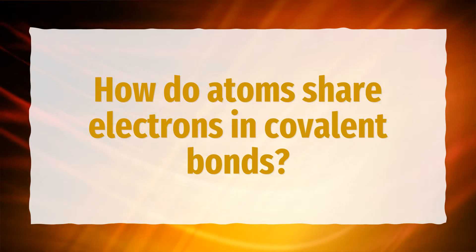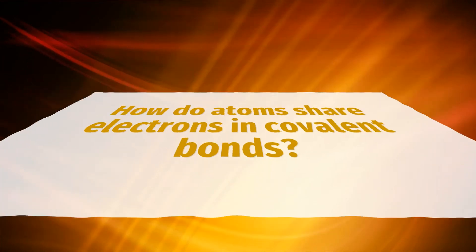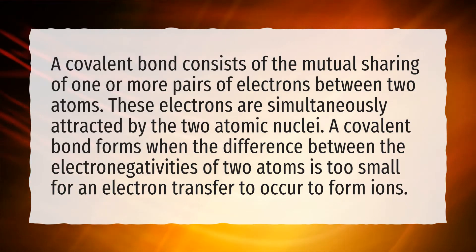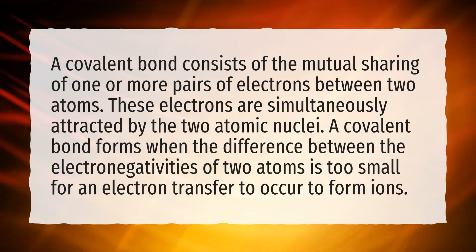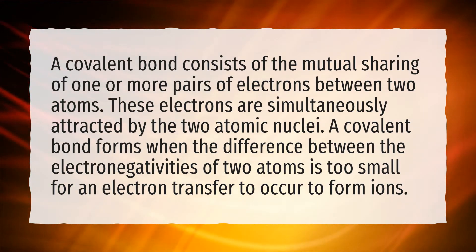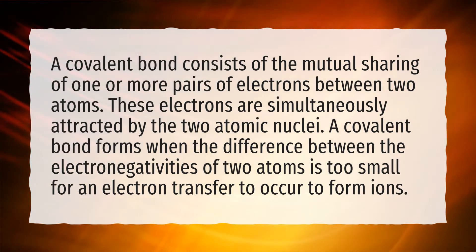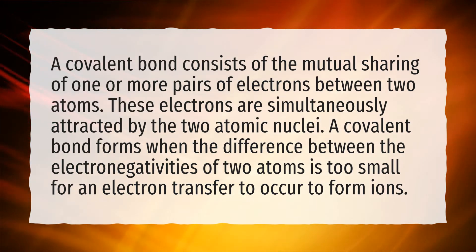How do atoms share electrons in covalent bonds? A covalent bond consists of the mutual sharing of one or more pairs of electrons between two atoms. These electrons are simultaneously attracted by the two atomic nuclei. A covalent bond forms when the difference between the electronegativities of two atoms is too small for an electron transfer to occur to form ions.